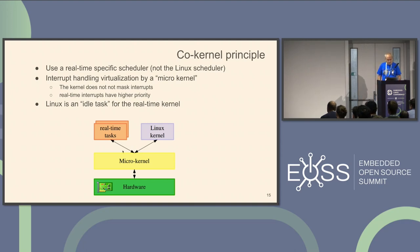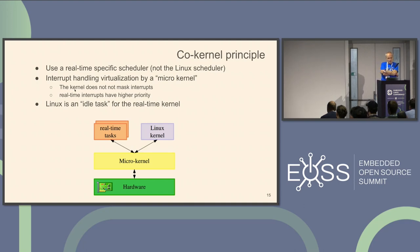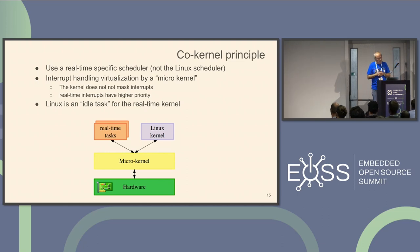We have a kind of micro-kernel with real-time tasks on a real-time domain and the Linux kernel in the Linux domain. There is a virtualization of the IRQ handling — the kernel cannot mask the interrupts. Real-time interrupts have greater priorities than any kind of Linux interrupts. So we can say Linux is an idle task for the real-time kernel.